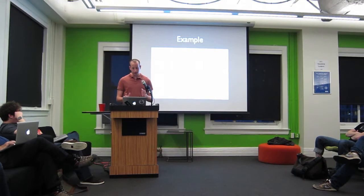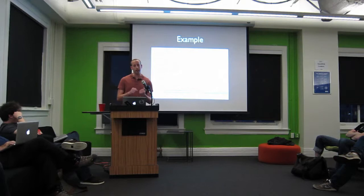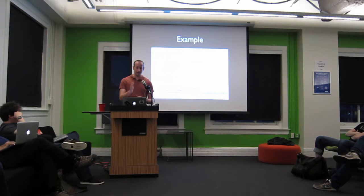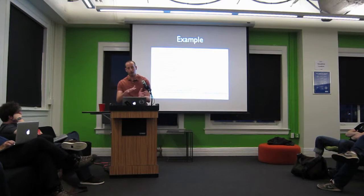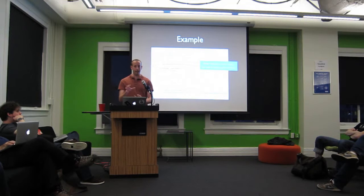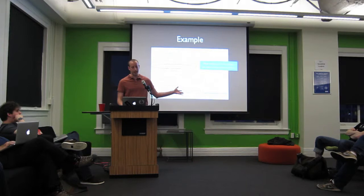That strong ordering is the key thing you need to get exactly-once semantics, even in the case of failures. Here's an example of how you would do idempotent counting with this primitive of strong ordering. Here I have this idempotent counting bolt. It's similar to that partial unique bolt shown before because it has a batch API for doing the processing. We get a new instance of this bolt for every batch we're processing, and the batch has this ID which is the transaction attempt.